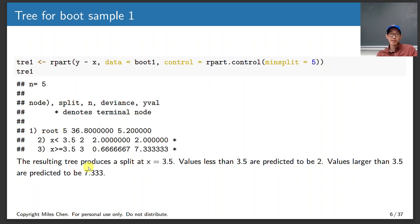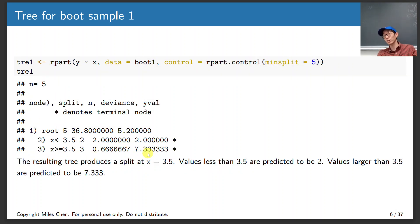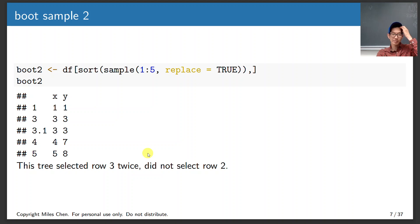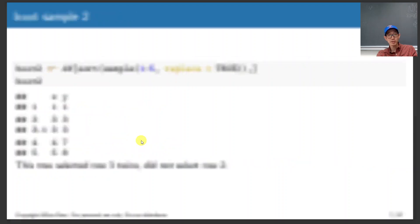When I run a decision tree on that resampled data, it says split at 3.5. If X is less than 3.5, predict 2; if greater than 3.5, predict 7.33. If I resample again and get 1, 3, 3, 4, 5, we'll probably split between 3 and 4 again at 3.5. If less than 3.5, predict 2.33; if greater than 3.5, predict 7.5.